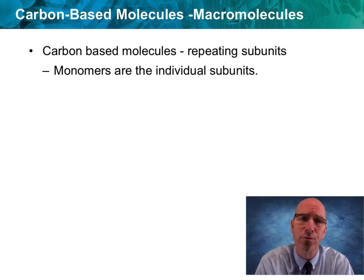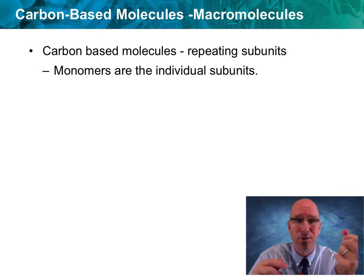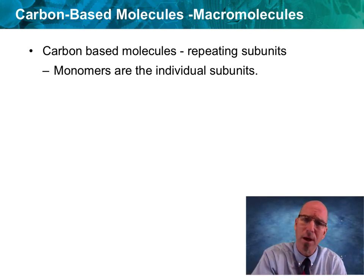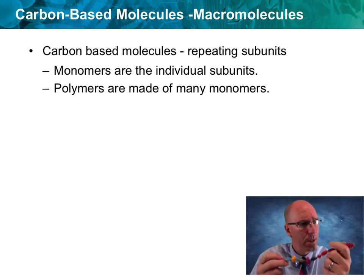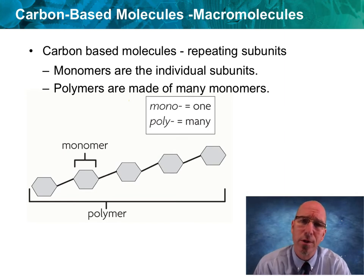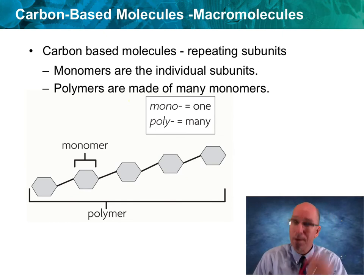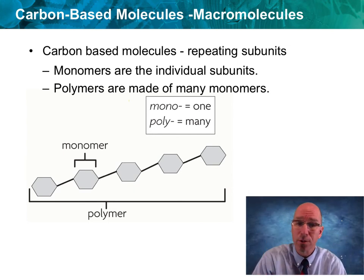Macromolecules are based on things called monomers — monomer means one. Here are some models: here's a repeating unit, this is one monomer, and here's another monomer. They have different shapes and sizes depending on which class of macromolecule, but they're going to be repeating units. A whole bunch of monomers put together is called a polymer — poly means many. Here's a picture showing hexagonal rings, like sugar molecules repeated over and over again. So monomers and polymers are small repeating subunits.